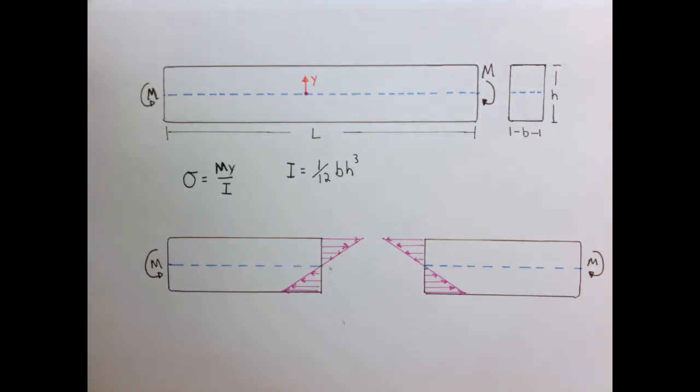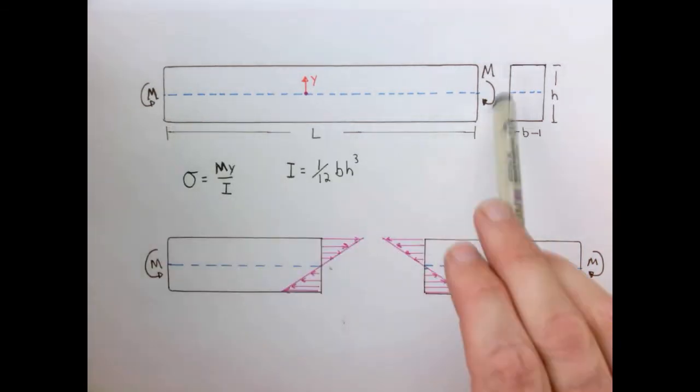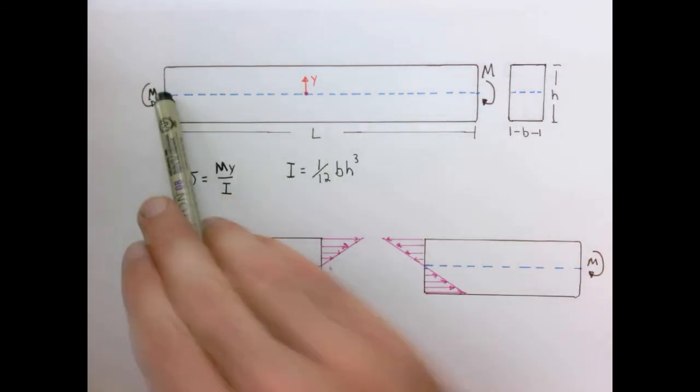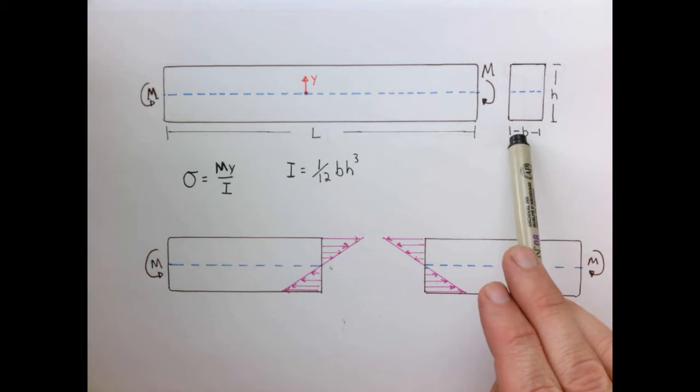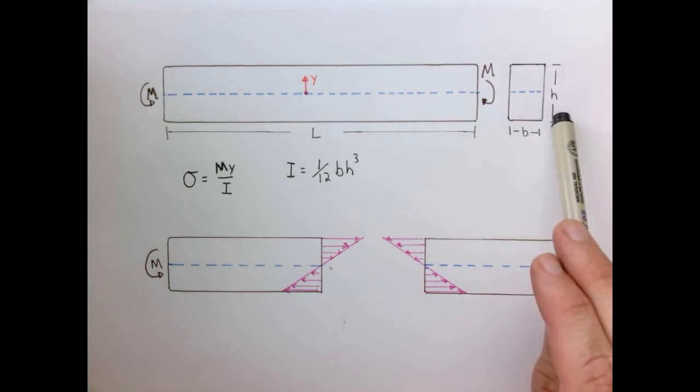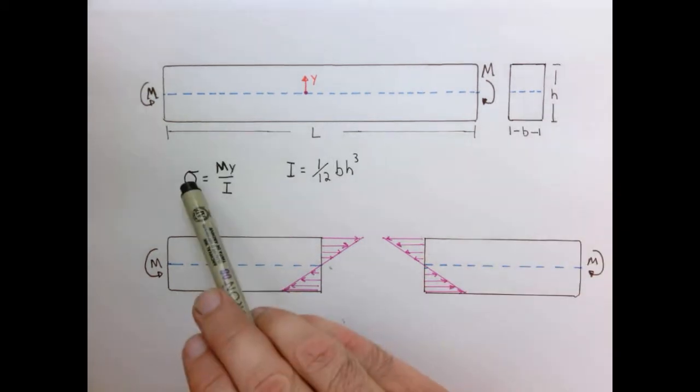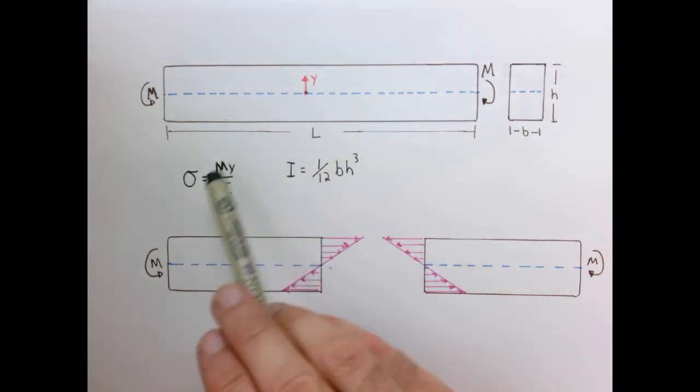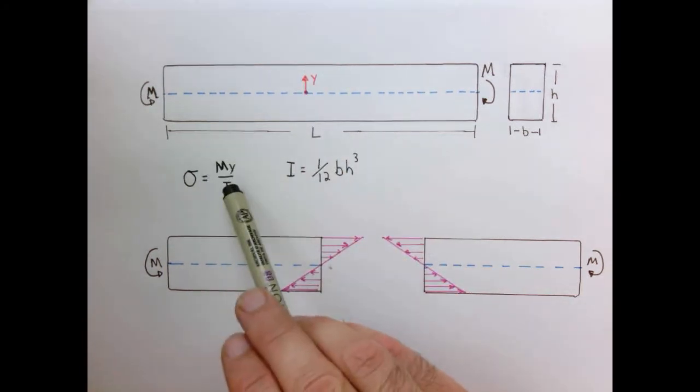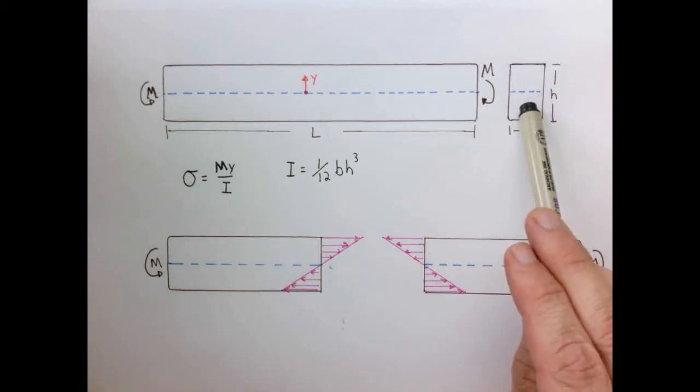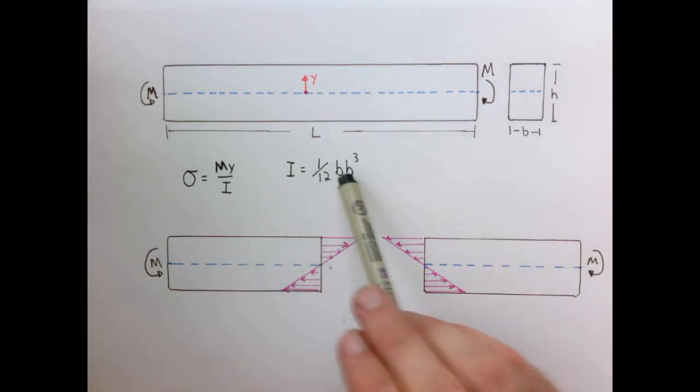Let's summarize everything we learned about bending on this one page. So I have a beam of length L where I'm applying a moment to the ends. The beam in the cross-sectional area has a width B and height H, and in this case the stress distribution inside this beam is given by MY over I, where I is the moment of inertia of the rectangular cross-section given by the formula one-twelfth BH cubed.